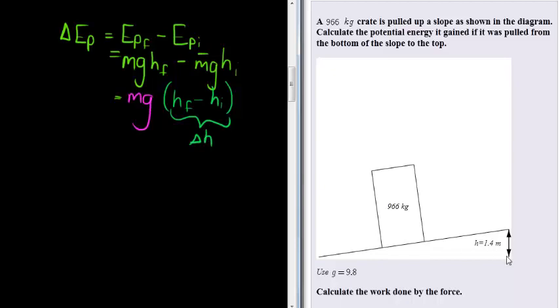We know what the change in the height was, only 1.4 meters. And that makes this question actually very easy, that the change in the potential energy is equal to the mass times the gravity times the change in the height.